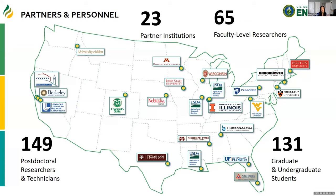CABI has a really large footprint at the University of Illinois and at IGB, but we're also more than just the University of Illinois. We have 23 partner institutions and many faculty-level researchers, graduate and undergraduate students, postdoctoral researchers and technicians all across the country.